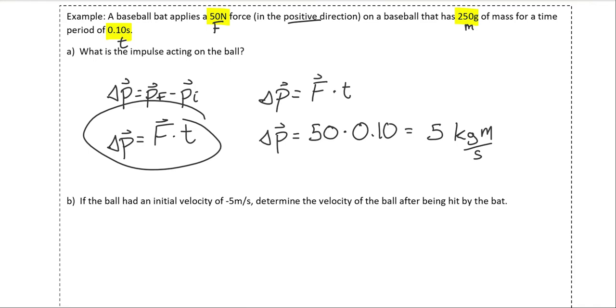All right, let's take a look at the second problem. If the ball had an initial velocity of negative 5 meters per second, determine the velocity of the ball after being hit by the bat.